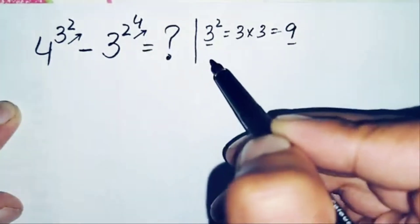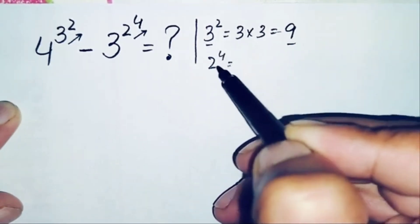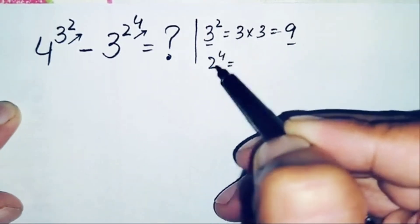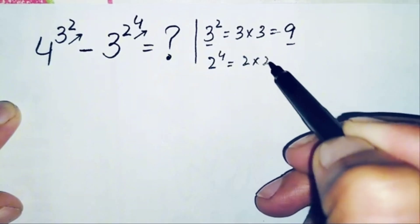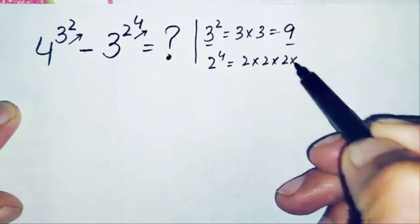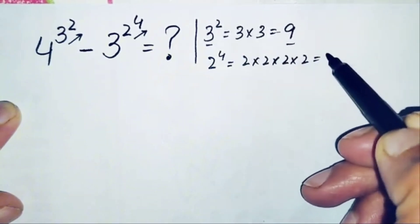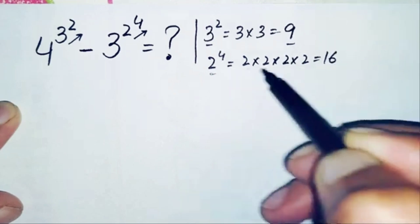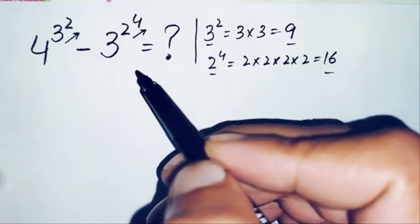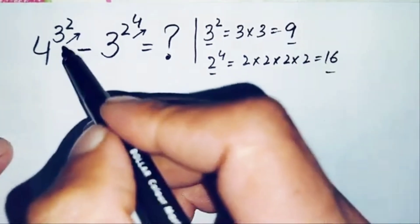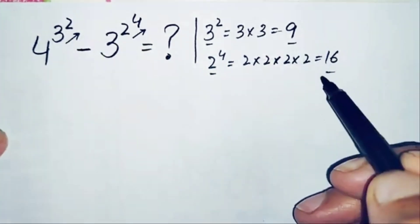Now, what is the value of 2 raised to power 4? We need to multiply 2 four times: 2 times 2 is 4, 4 times 2 is 8, 8 times 2 is 16. So 2 raised to power 4 is 16. We will replace 3 raised to power 2 with 9 and 2 raised to power 4 with 16.